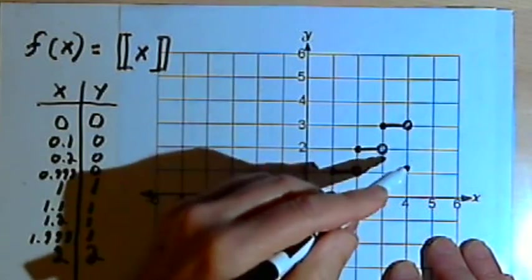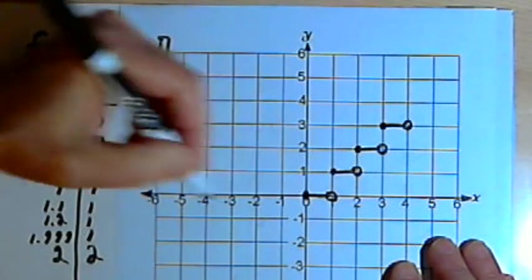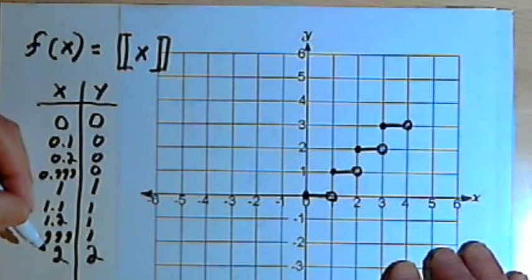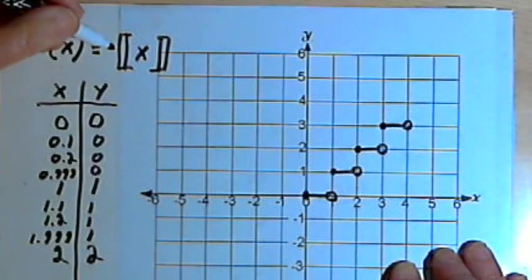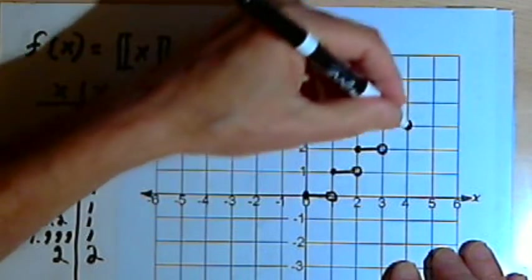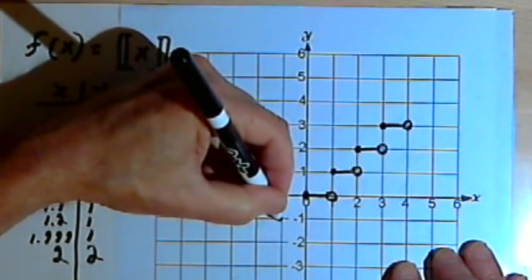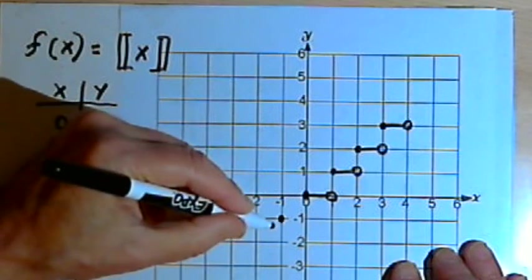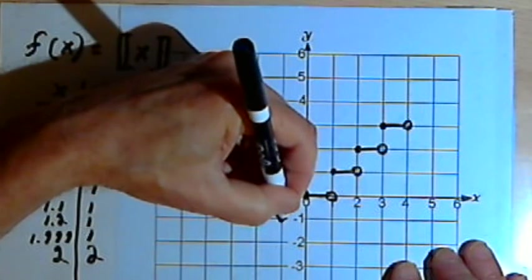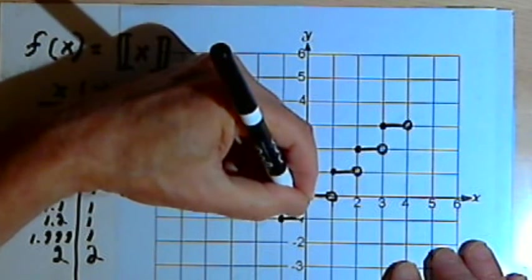If I want to do the negative numbers, once I've got a pattern like this, rather than calculate what the negative greatest integer values would be, I'm just going to move my way down with that same pattern. So I'm going to go to (-1,-1), move horizontally to the right.